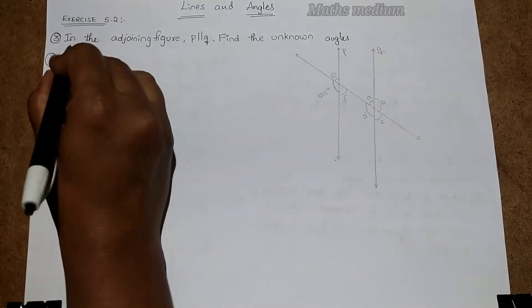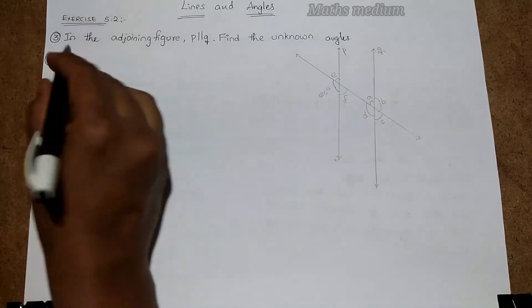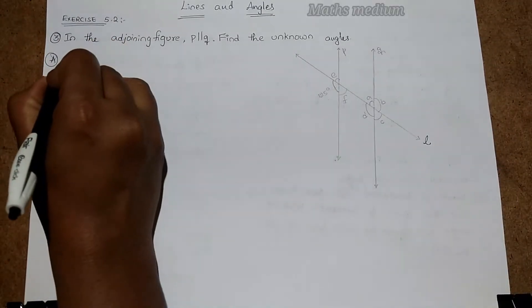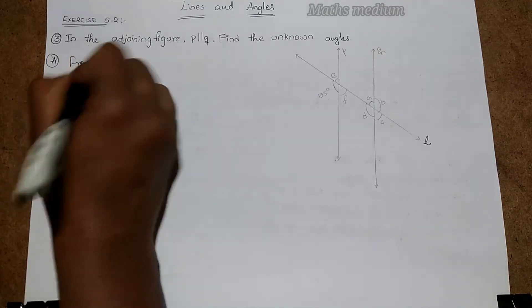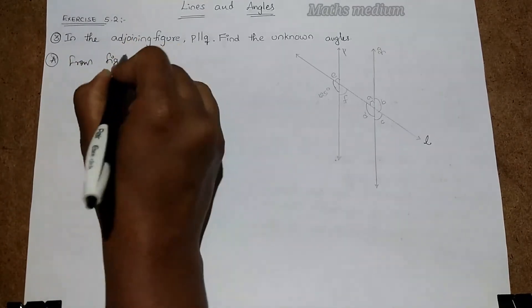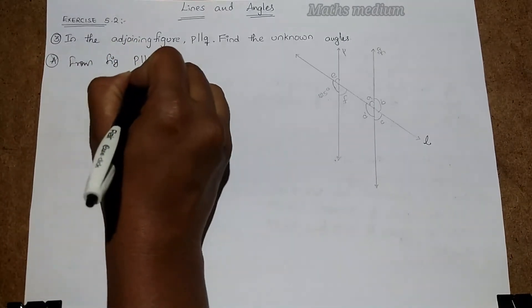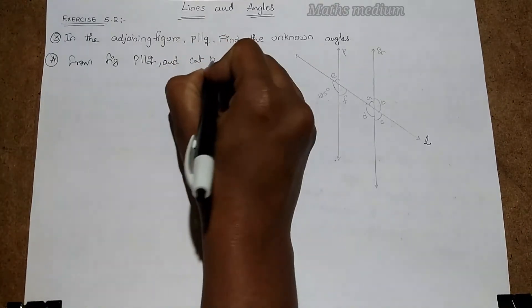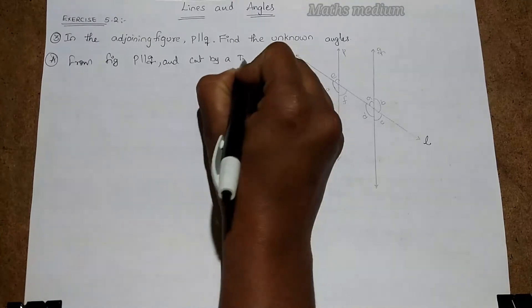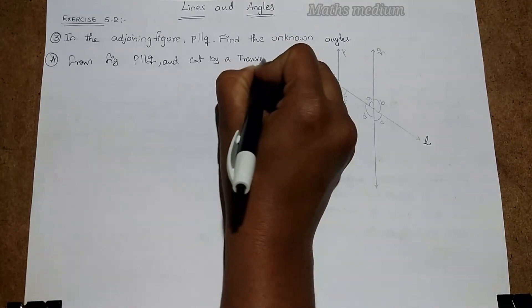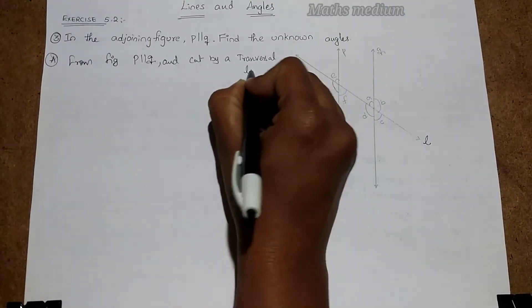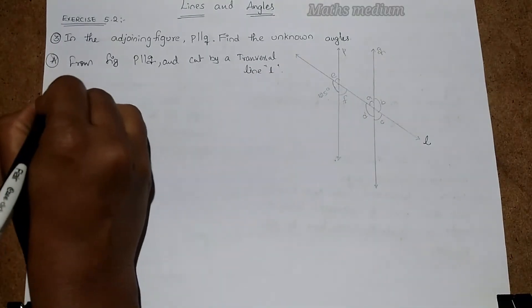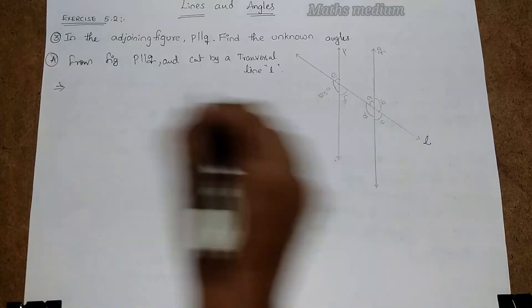Let's take, we have to write one line. Let it be line L. So from figure, P is parallel to Q and cut by a transversal line L. Next, moving to the question.